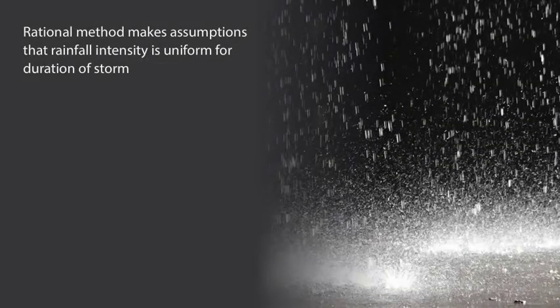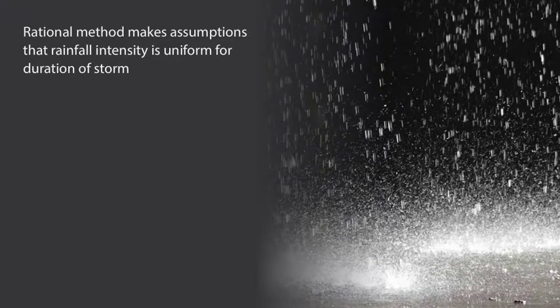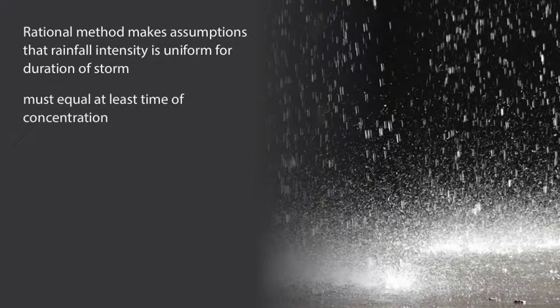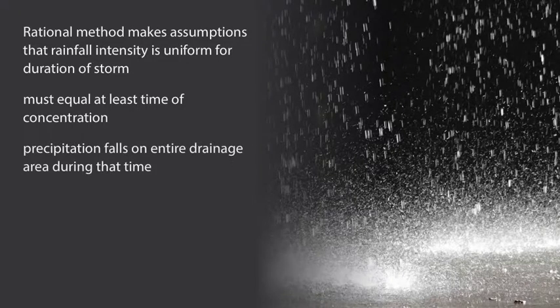The rational method makes the simplifying assumptions that the rainfall intensity is uniform for the duration of the storm, which must equal at least the time of concentration, and that the precipitation falls on the entire drainage area during that time. These assumptions obviously cannot be applied to large areas.